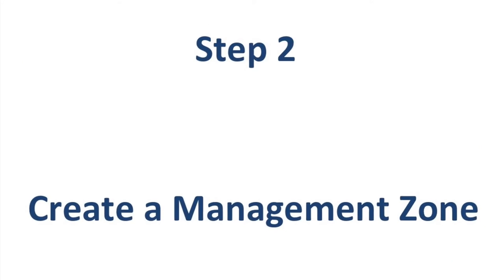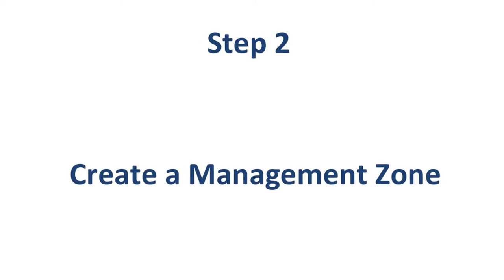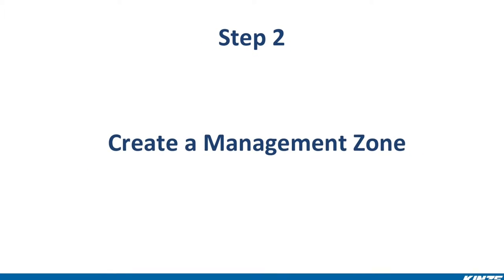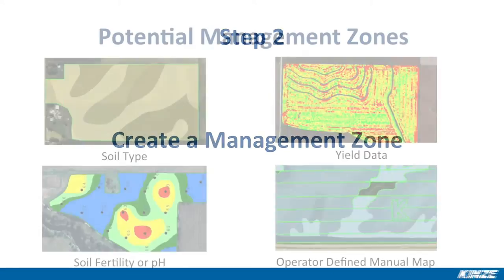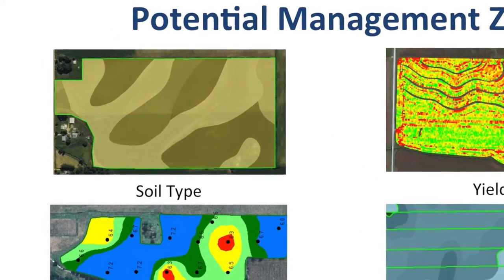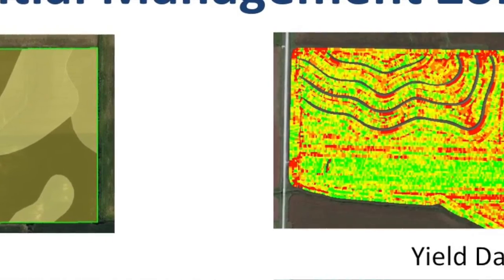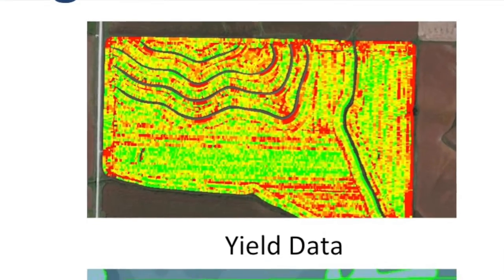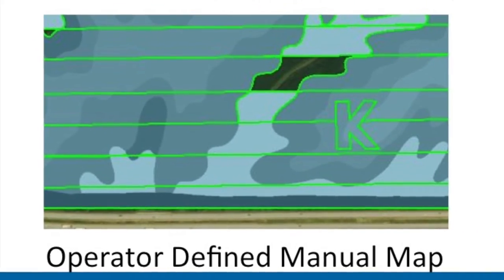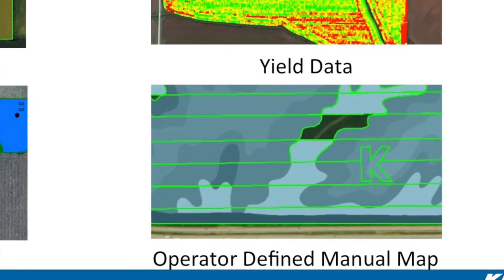The next step in the process is creating a management zone. These zones are what you will use to determine the hybrid and rate that will be planted in the different parts of your field. Several different factors can be utilized to create a management zone. Some examples include soil type, previous yield data, soil fertility, pH levels, wet versus dry areas of your field, or farmer-specific knowledge on field conditions.